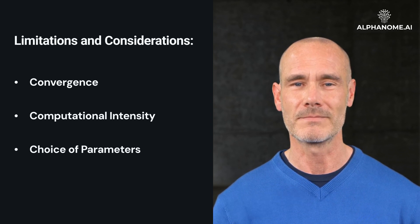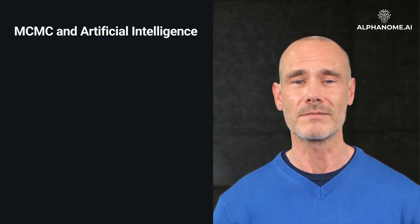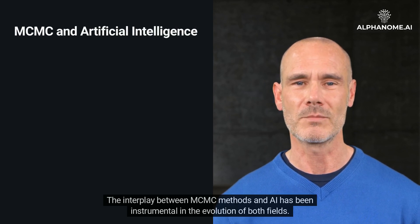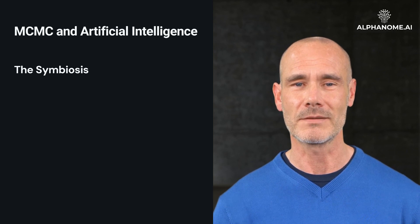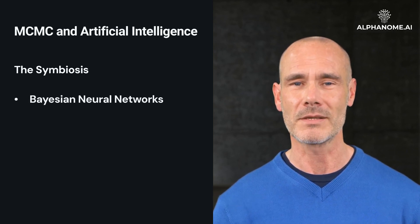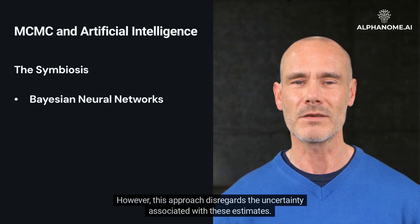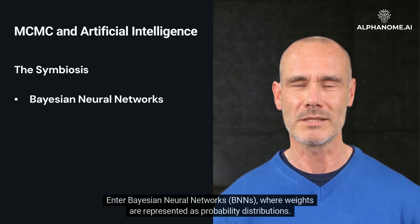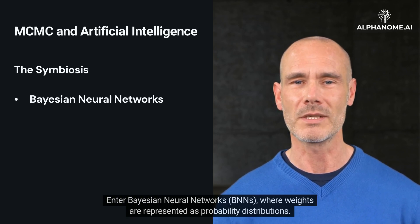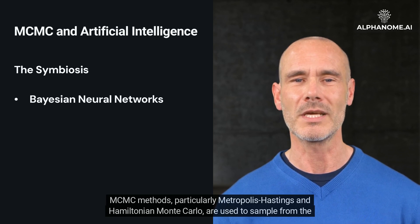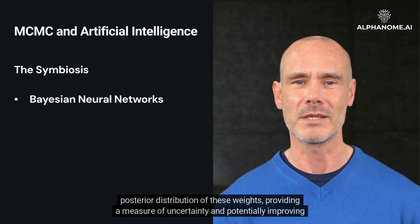MCMC and Artificial Intelligence. The interplay between MCMC methods and AI has been instrumental in the evolution of both fields. The symbiosis: Bayesian neural networks. Neural networks, foundational to AI, typically rely on point estimates for weights. However, this approach disregards the uncertainty associated with these estimates. Enter Bayesian neural networks, BNNs, where weights are represented as probability distributions. MCMC methods, particularly Metropolis-Hastings and Hamiltonian Monte Carlo, are used to sample from the posterior distribution of these weights, providing a measure of uncertainty and potentially improving robustness.